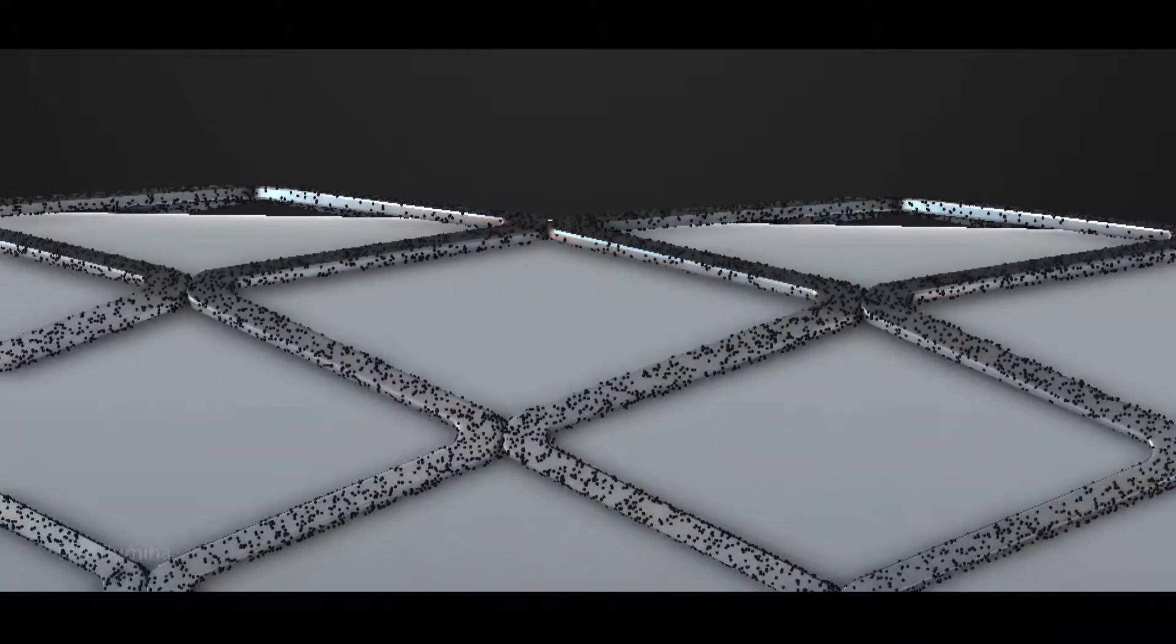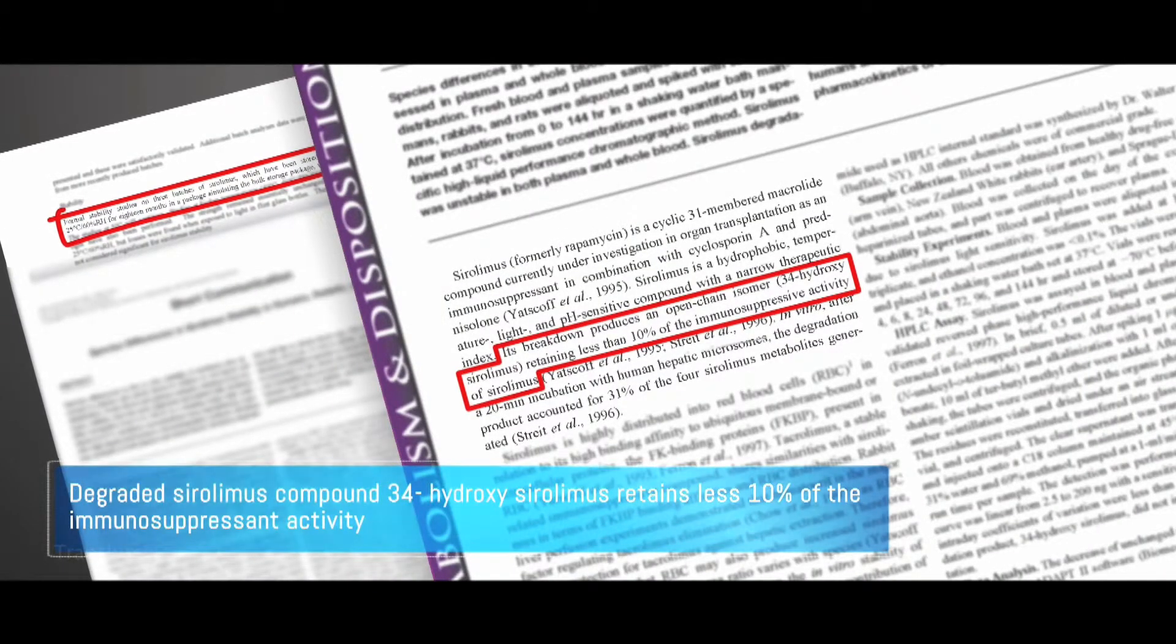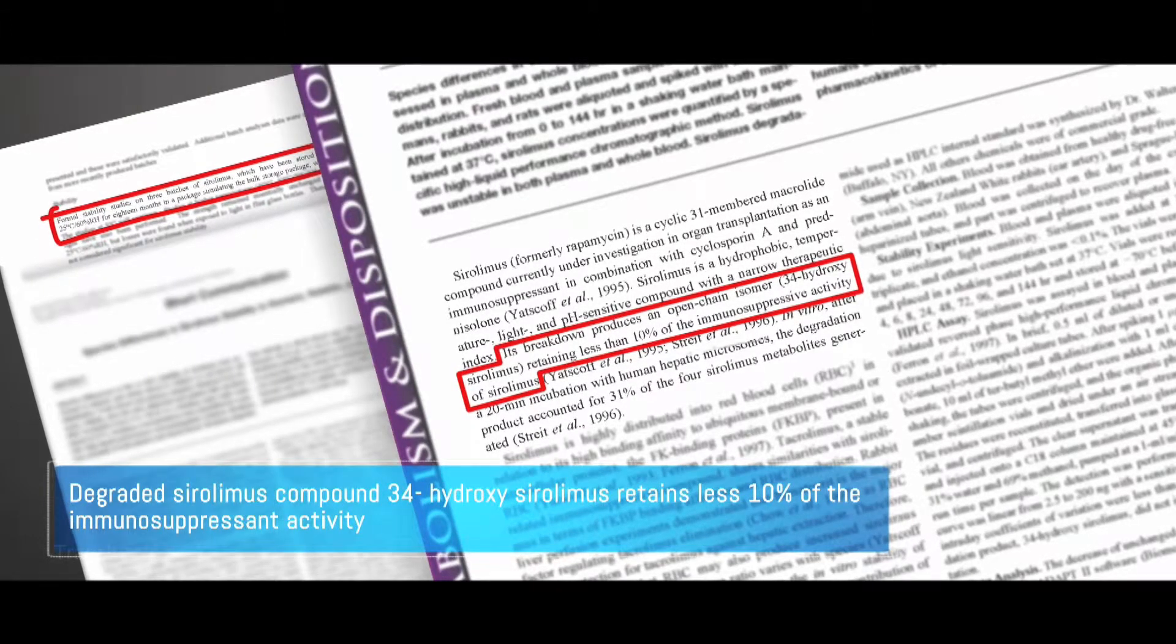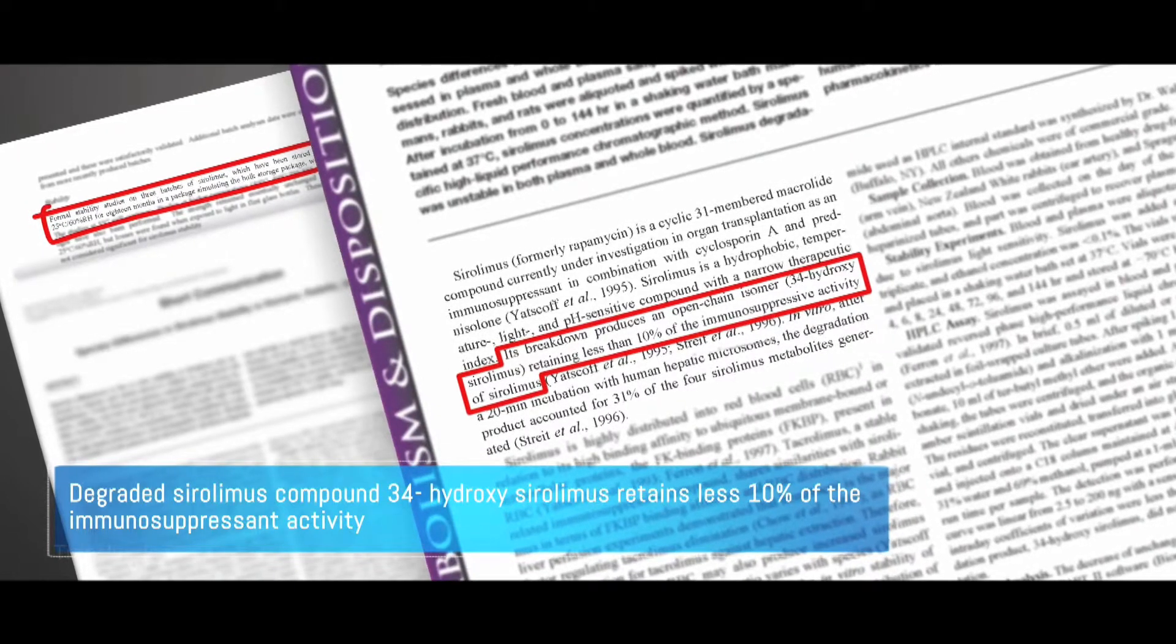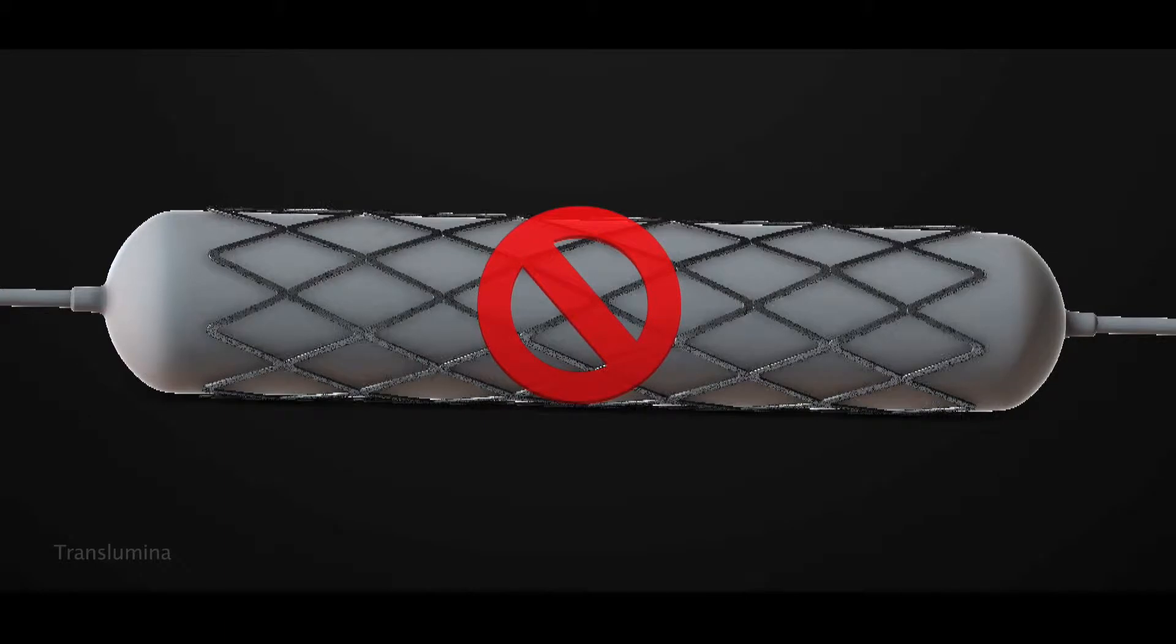The degraded sirolimus compound, 34-hydroxy sirolimus breakdown, produces an open chain isomer, retaining less than 10% of the immunosuppressive activity of sirolimus, thus making it ineffective for use.